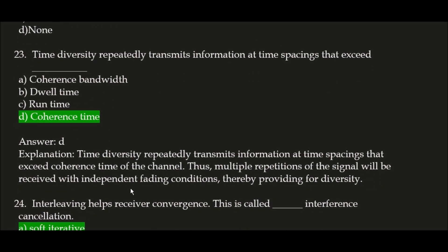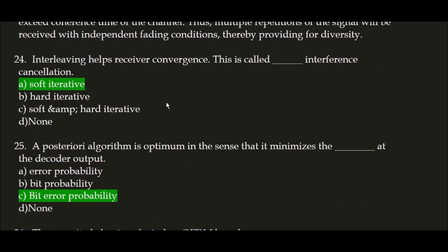Next question: time diversity repeatedly transmits information at time spacings that exceed blank space. The correct answer is option D, coherence time. Time diversity repeatedly transmits information at time spacings that exceed the coherence time of the channel, so multiple repetitions of the signal will be received with independent fading conditions, thereby providing diversity. Next question: interleaving helps receiver convergence — this is called blank space interference cancellation. The correct answer is option A, soft iterative. Interleaving helps receiver convergence; this is called soft iterative interference cancellation.